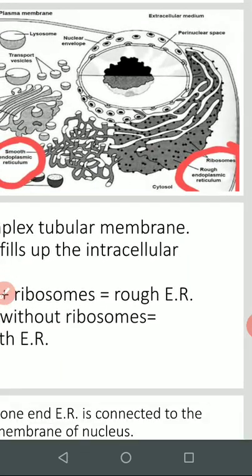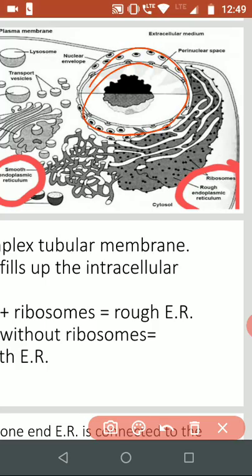This is a nucleus and here is a network, a complex network. This is all endoplasmic reticulum. Now this complex structure starts from the nuclear membrane and extends all the way to the cytoplasm of the cell.